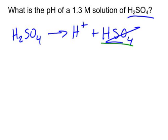So when we do something with sulfuric acid, we're just going to concentrate on its first H+, its first ionization. So essentially, this is almost like finding the pH of HCl.